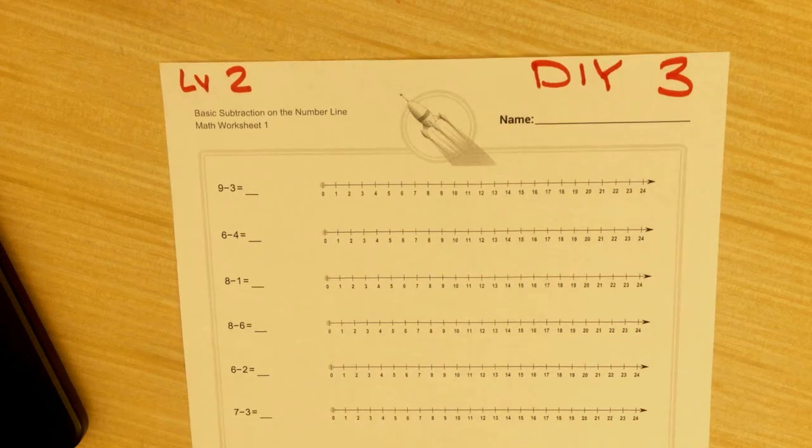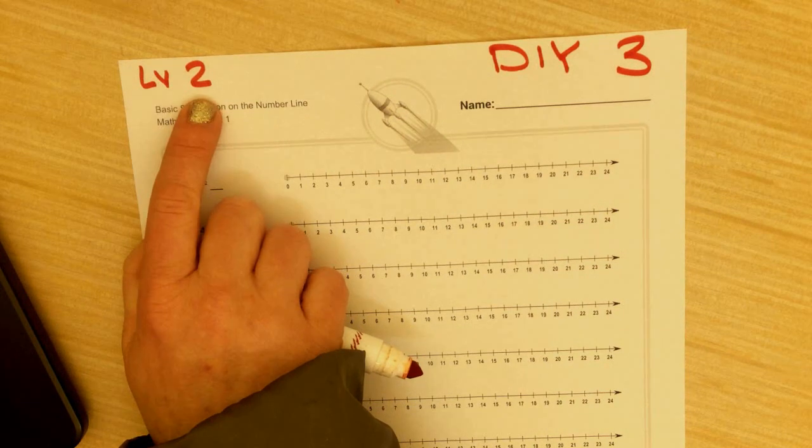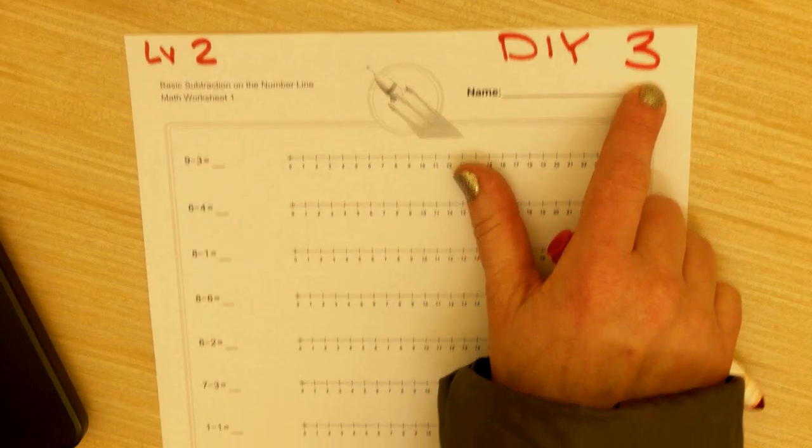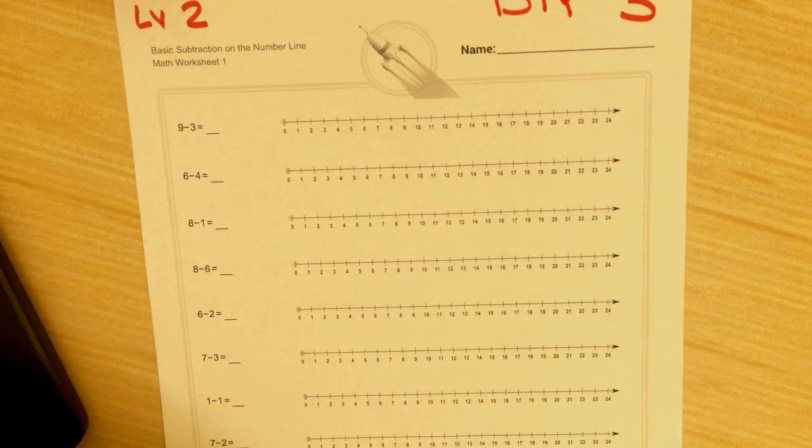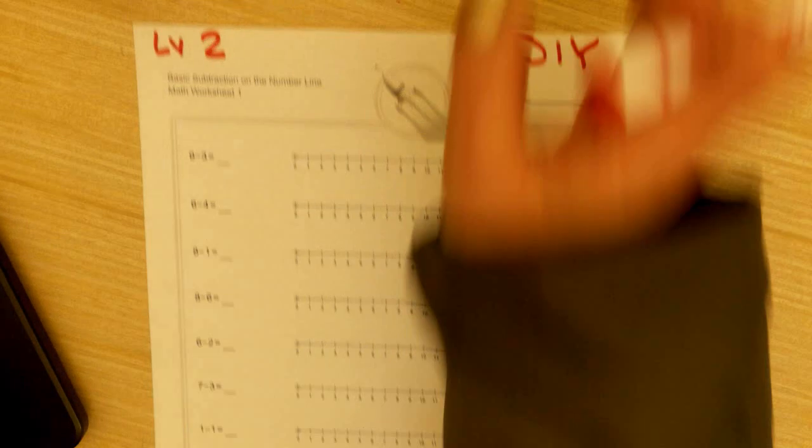Hey, first grade. Let's check in and make sure we're looking at the right paper. You should be looking for level 2, DIY 3. In this activity, we are going to practice using number lines to solve subtraction problems. We're going to do a couple together.